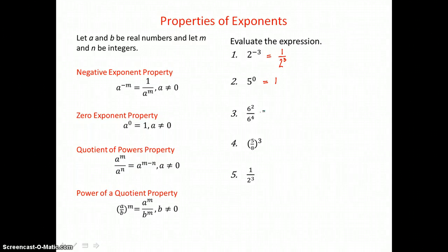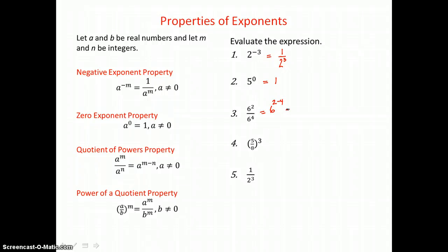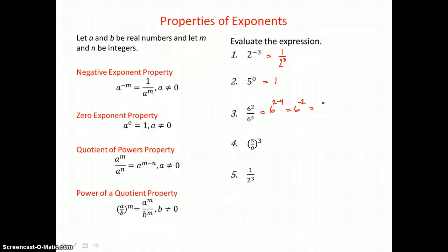In example 3, we're dividing like bases. When we divide like bases, we subtract exponents. So we have 6 to the 2 minus 4 power, or 6 to the negative 2 power. But we don't leave negative exponents in our answer, so we have to use our negative exponent property and move that base to the denominator of the fraction and make the exponent positive. So we end up with 1 over 6 squared.